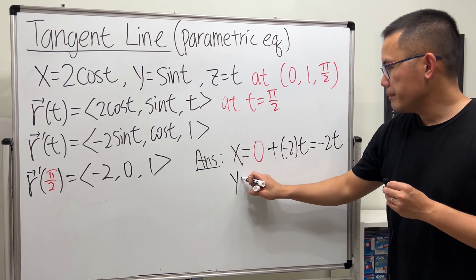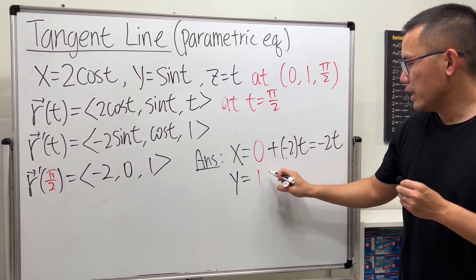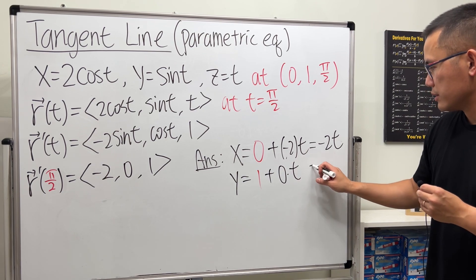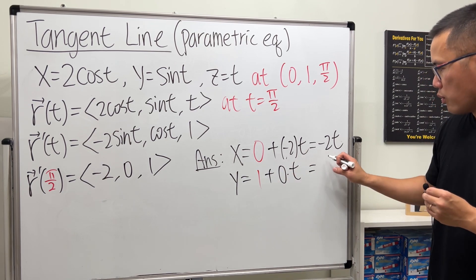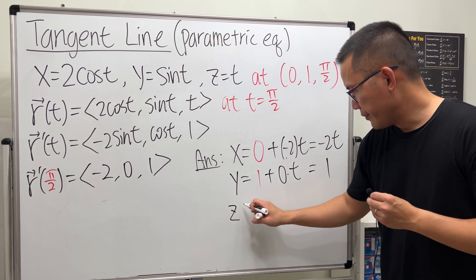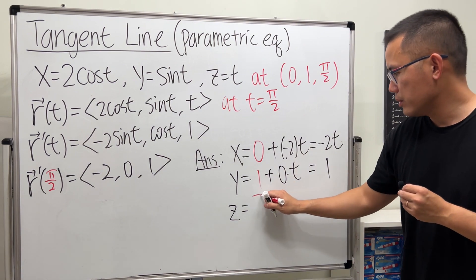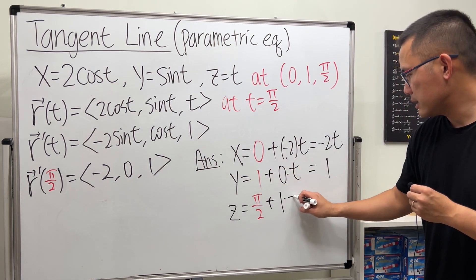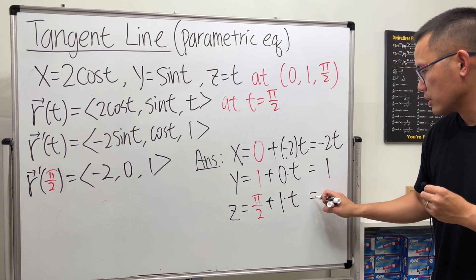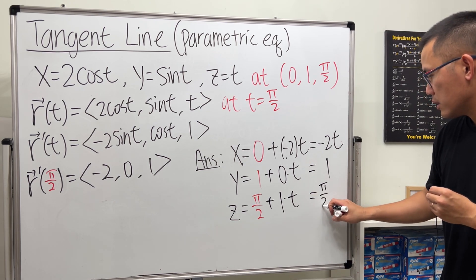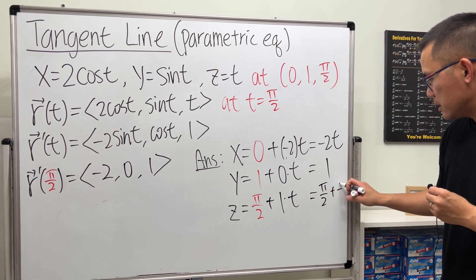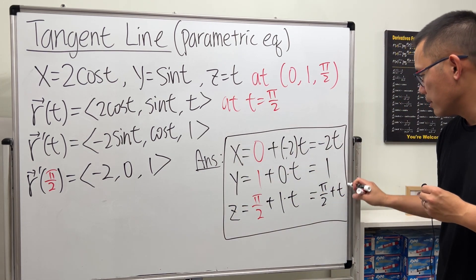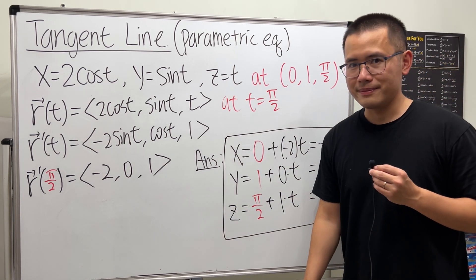For Y, we start at 1 and add 0 times T, so that's just 1. And lastly, Z equals π over 2 plus 1 times T, which is just π over 2 plus T. So these are the parametric equations for the tangent line.